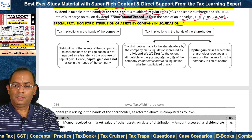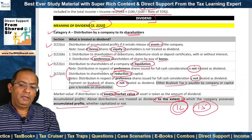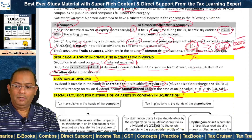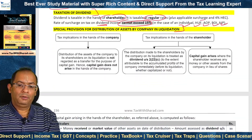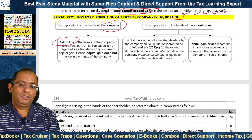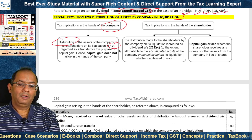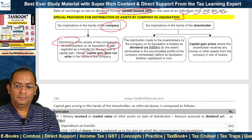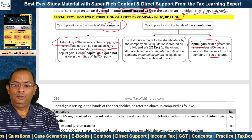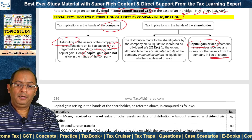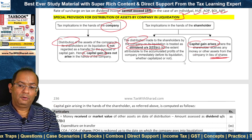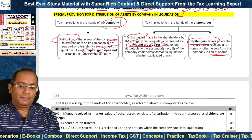There are certain special provisions for distribution of assets by a company in liquidation. As noted, Section 2(22)(c) — distribution to shareholders of a company on its liquidation — is treated as dividend and taxable in the hands of the shareholder to the extent of accumulated profits. In the hands of the company, distribution of assets to shareholders in liquidation is not regarded as a transfer for the purpose of capital gain, so no capital gain arises in the hands of the company. Capital gain arises in the hands of the shareholder instead, when the shareholder receives money or other assets from the company in lieu of shares.